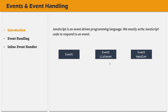For example, button is the DOM element. On that button, when a click event happens, the event listener will be listening to that click event. When that click event happens, it will notify the event handler, and the event handler code will be executed. We will understand this with a practical example in a bit.